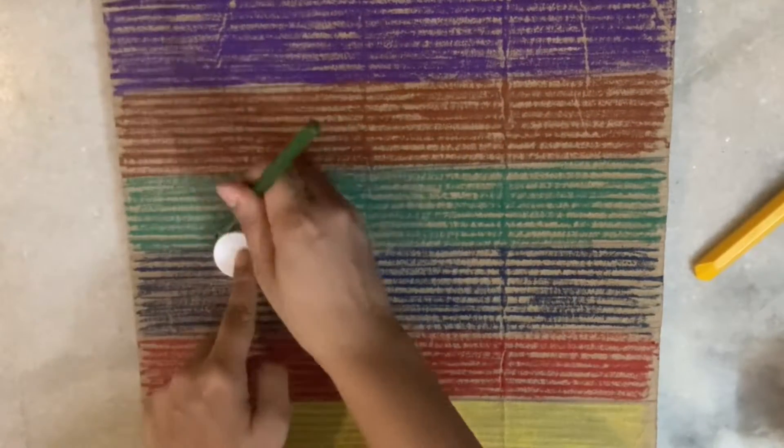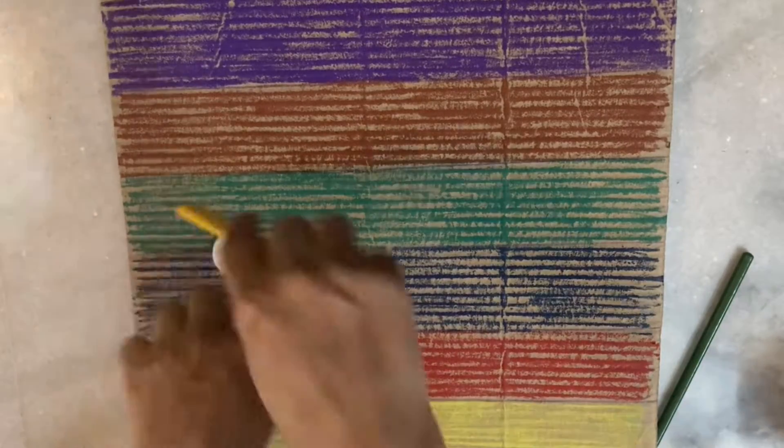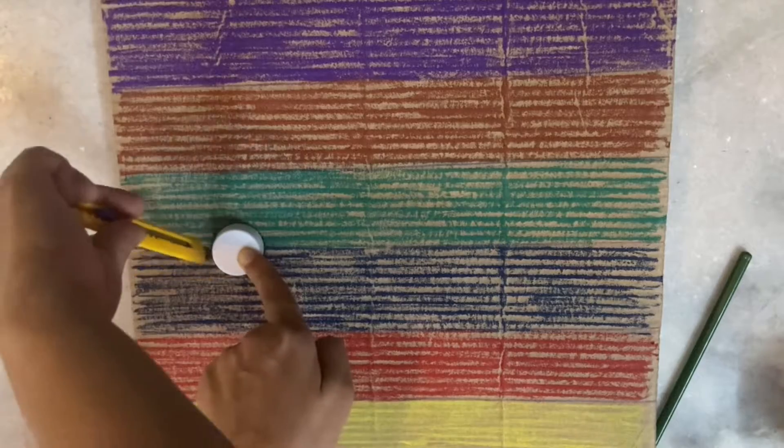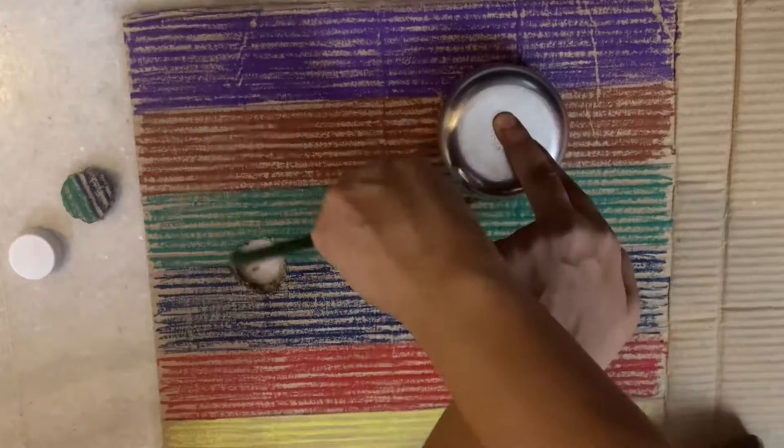We have drawn different circles on it of different sizes by using a bottle cap, a bowl, and a mug. Then you can cut them out using a cutter.